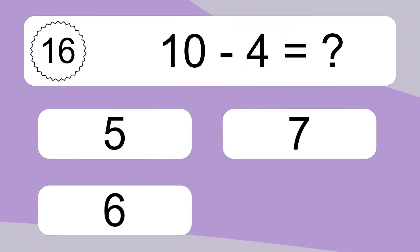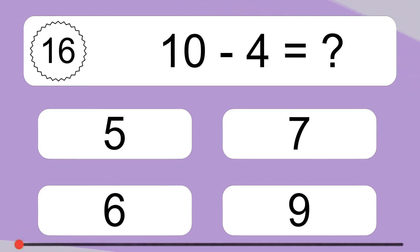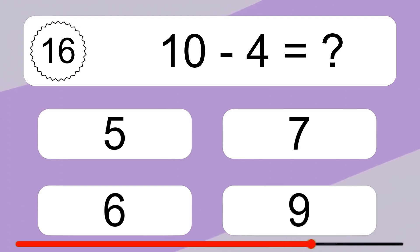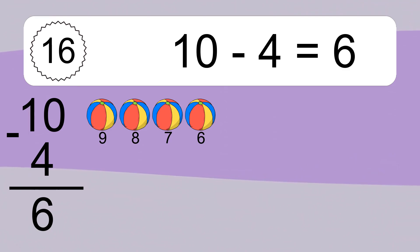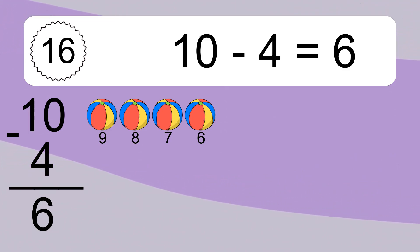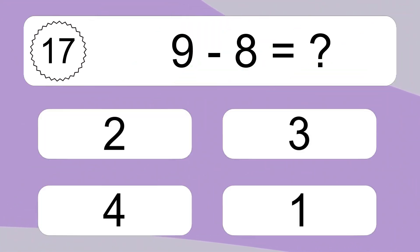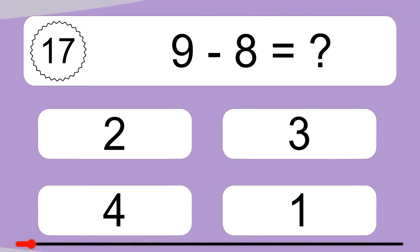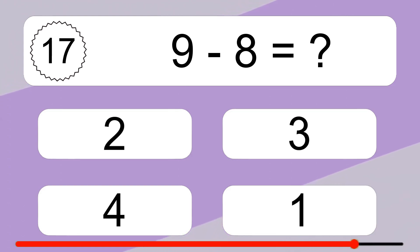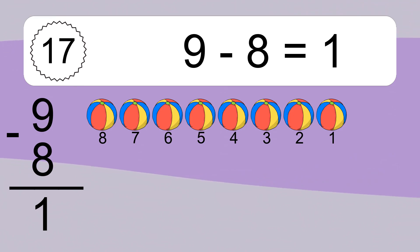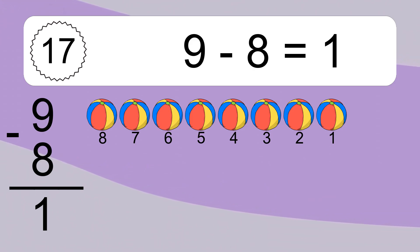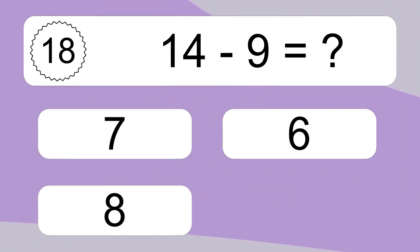10 minus 4 equals what? 10 minus 4 equals 6. Let's count it: 9, 8, 7, 6. 9 minus 8 equals what? 9 minus 8 equals 1. Let's count it: 8, 7, 6, 5, 4, 3, 2, 1.